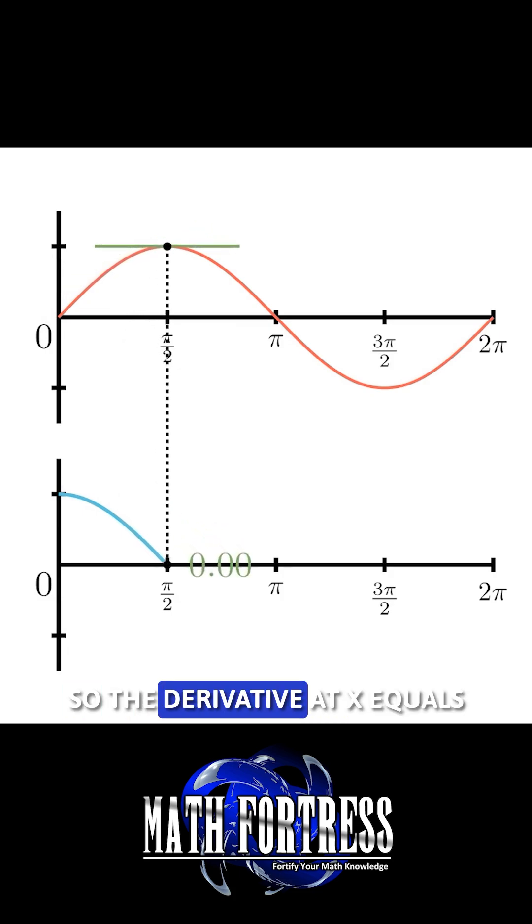So, the derivative at x equals pi over 2 is equal to 0. The graph of the derivative crosses the x-axis at this x value.